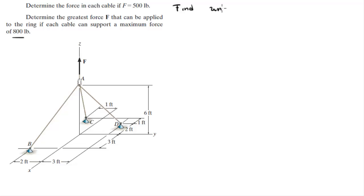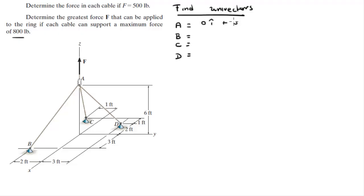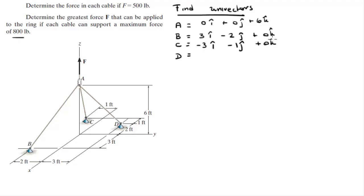The first thing you need to do is find the unit vectors. To do that, you need to find the points involved: A, B, C, and D. A sits at (0i + 0j + 6k). B sits at (3i − 2j + 0k). C sits at (−3i − 1j + 0k). And D sits at (−2i + 3j + 0k).